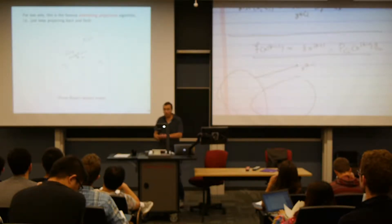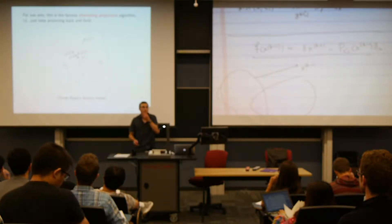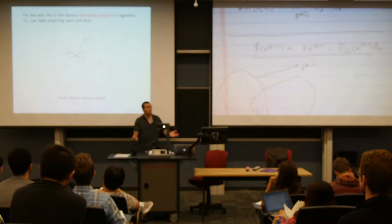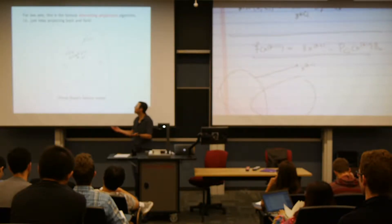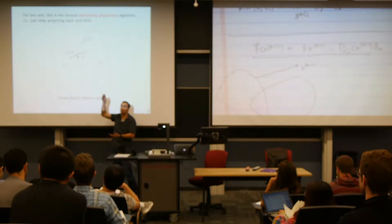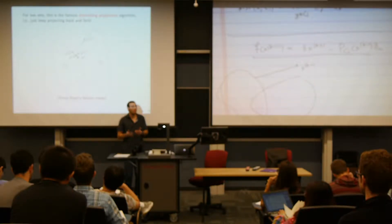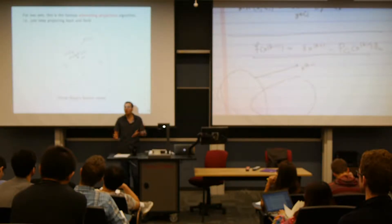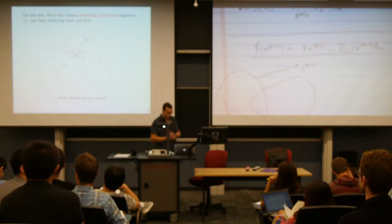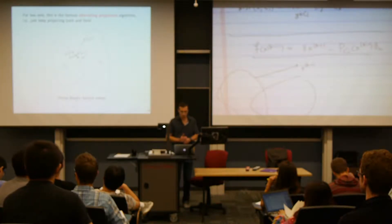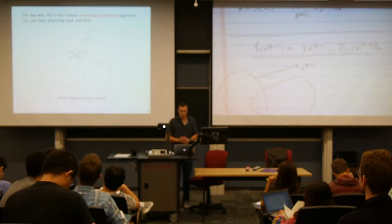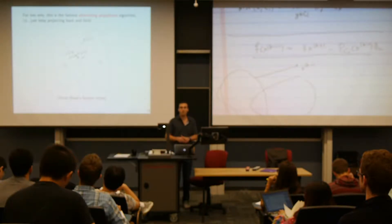This is actually the alternating projections algorithm — or the multiple alternating projections algorithm with more than one set. With just two sets you're projecting back and forth between them. With more sets you're always projecting to the farthest one. This is probably the algorithm you would have come up with from first principles — it's a very natural way to approach this problem.